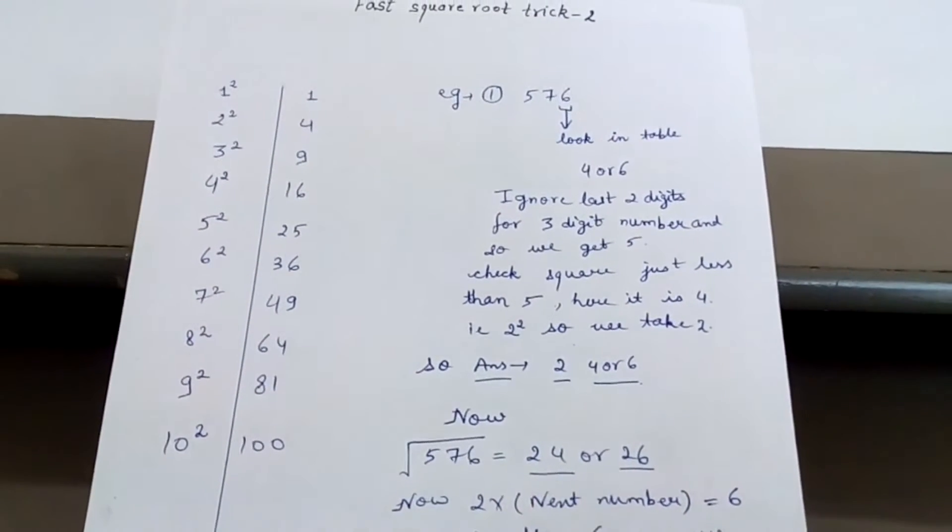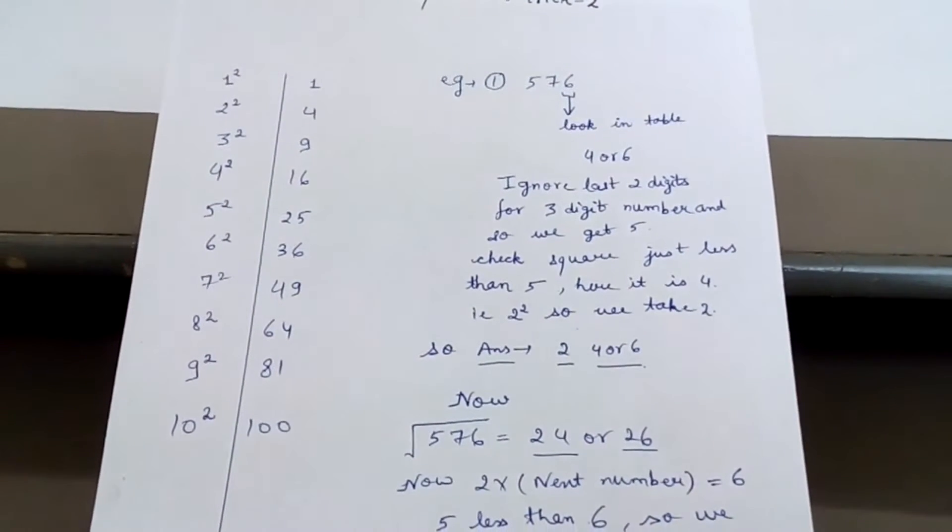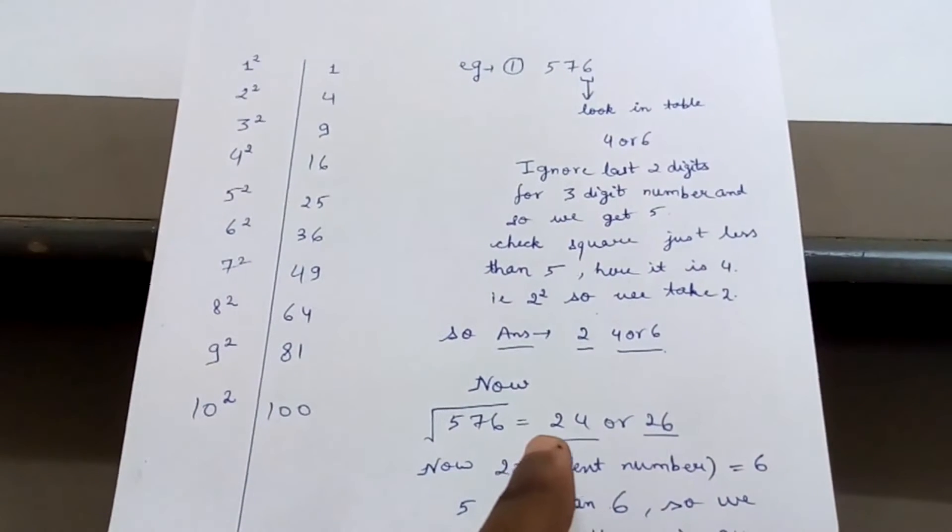Now how to eliminate and find the correct answer? You take this tenth digit, that is 2, and you multiply it with the next digit, that is 2 into 3 equals 6.